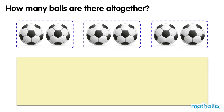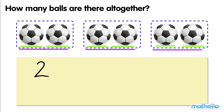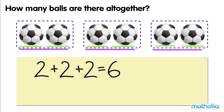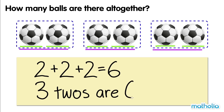How many balls are there altogether? There are three groups of balls. Each group has two balls. Two plus two plus two equals six. Three twos are six. There are six balls altogether.